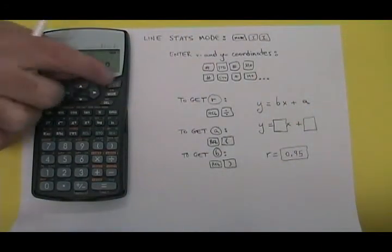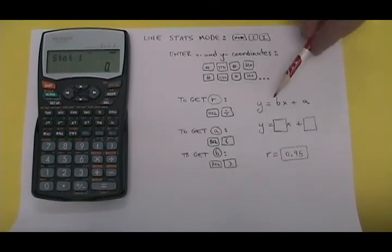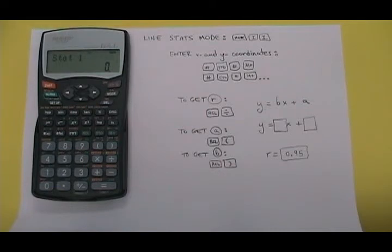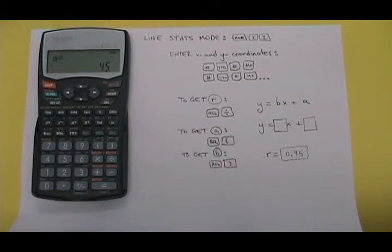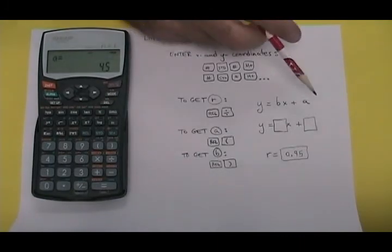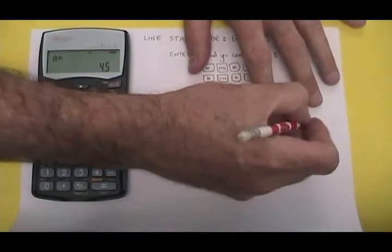Now I want to find the a and the b for the equation of the regression line. The equation of the regression line has the form y equals bx plus a. To find the a, I press recall open bracket. My a is 4.5. The a goes right here in the equation. So in this box, I'm going to enter 4.5.